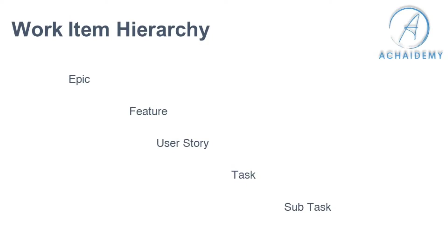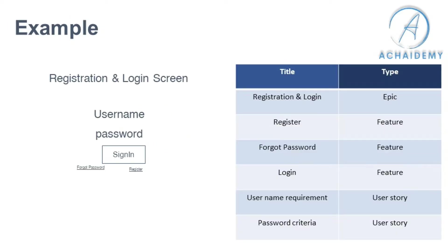Let's take an example of this work item. Consider a registration and login page — a UI where you have a username, password, a forgot password link, a register link, and a sign-in button. How would you identify what will be a user story, what will be a feature, and what will be an epic?